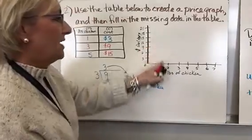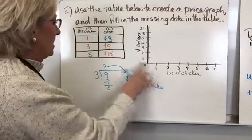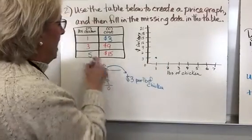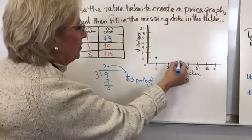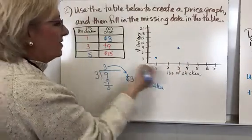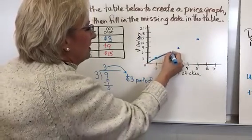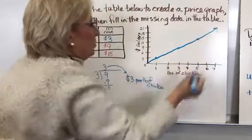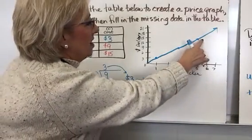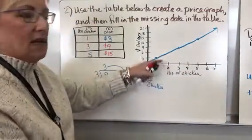I've already got my grid out. One pound of chicken costs $3, so I'm going to go to one pound and three dollars and plot that point. Three pounds costs $9, so I go to three pounds and up to nine. Five pounds costs $15, which is going to be about right here. I'll graph it as straight a line as I can — using a ruler — and put an arrow because it can keep going. Looking at it, $6 worth is going to cost somewhere about $16 and a few odd cents, so I can compare prices.